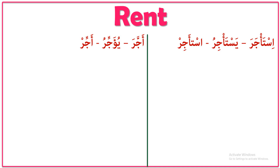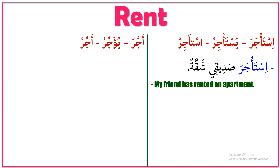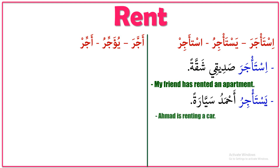Examples for istajara first. Past tense: 'istajara sadiqii shaqqatan' — which means 'my friend has rented an apartment.' Present tense: 'yastajiru Ahmadu sayyaara' — which means 'Ahmad is renting a car.'